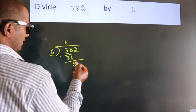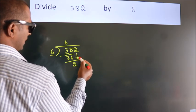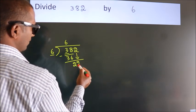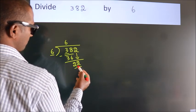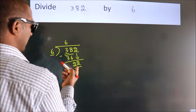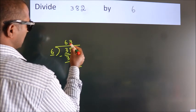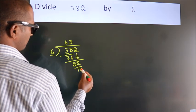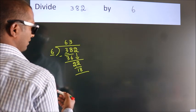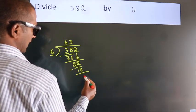After this, bring down the next number. So 2 comes down, making 22. A number close to 22 in the 6 table is 6×3, 18. Now we subtract and get 4.